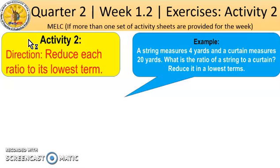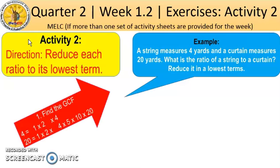So the ratio of a string to a curtain is 4 is to 20. First, let us find the greatest common factor of both terms. The factors of 4 are 1, 2, and 4. The factors of 20 are 1, 2, 4, 5, 10, and 20. So the greatest common factor of both terms is 4.